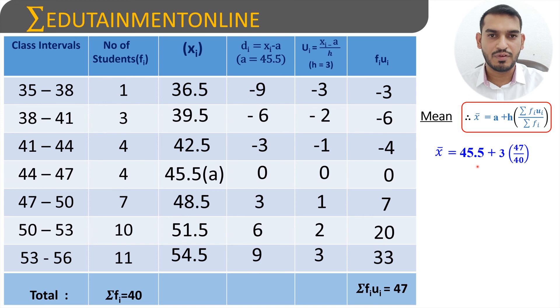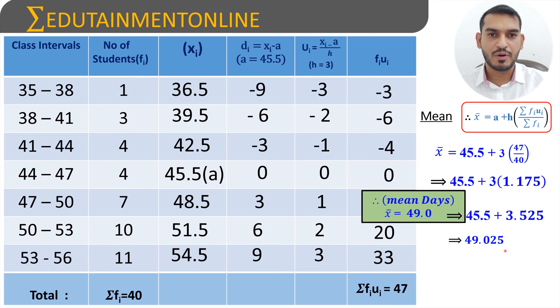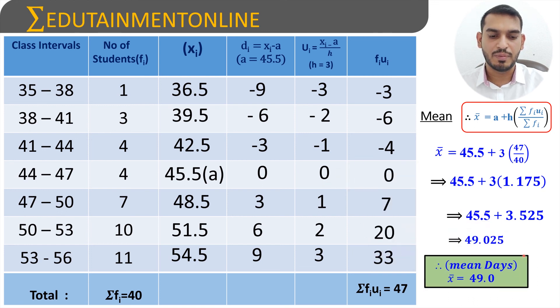So we will get 45.5 plus 3 into 47 by 40. So 47 by 40 is 1.175. So 3 times of 1.175 will be 3.525 plus 45.5. So adding up this one, that will be 49.025 days. So approximately 49 days. Therefore the mean is 49.